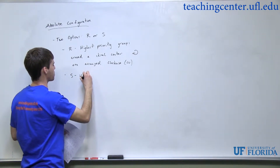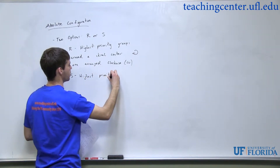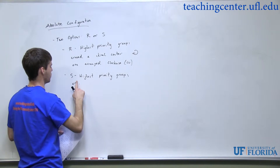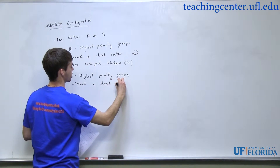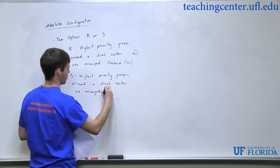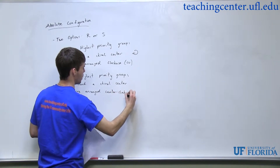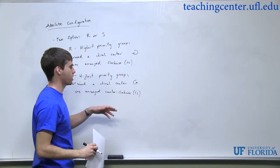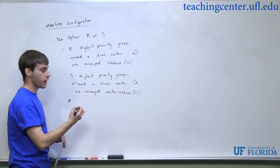S is just the opposite — the highest priority groups around a chiral center are arranged counterclockwise, which I'll call CC. That arrow goes to the left. When I say highest priority groups, I'm referring to atomic number.